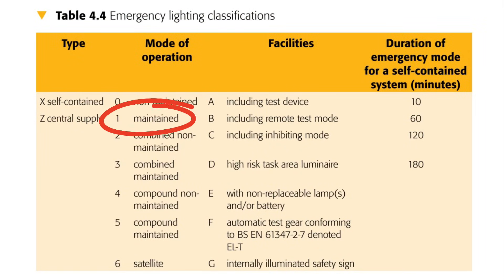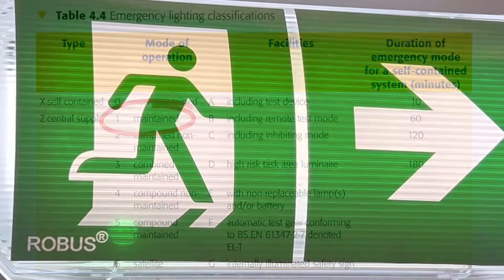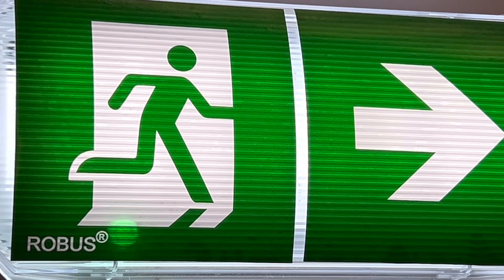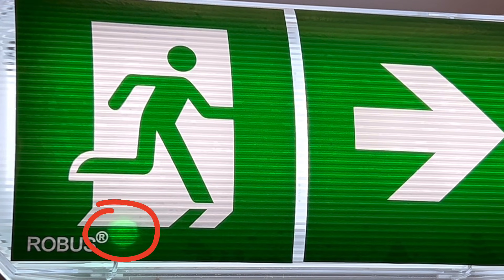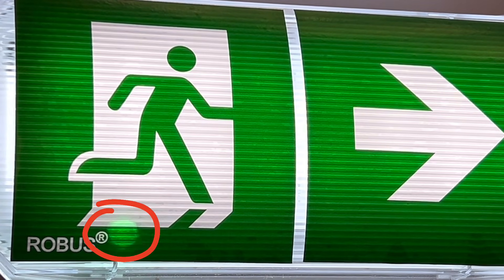Mode one is maintained. This type of emergency light is on at all times, so if the power supply to the fitting is healthy and all is well, the light will be on. If the circuit feeding the fitting fails for some reason, the light will remain on, but now being powered by the internal battery.